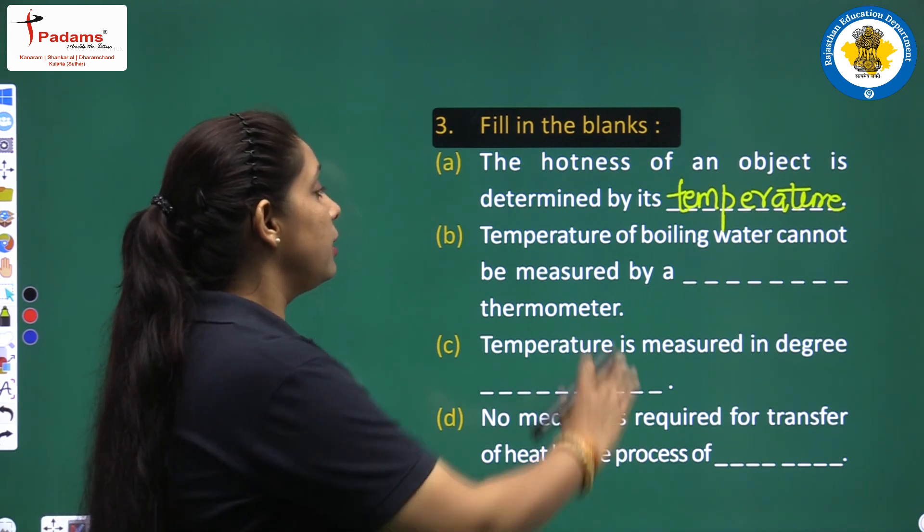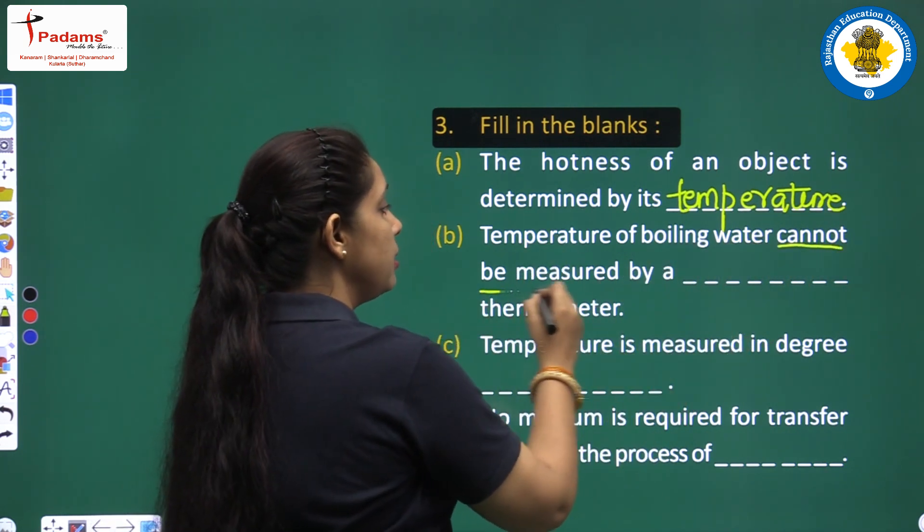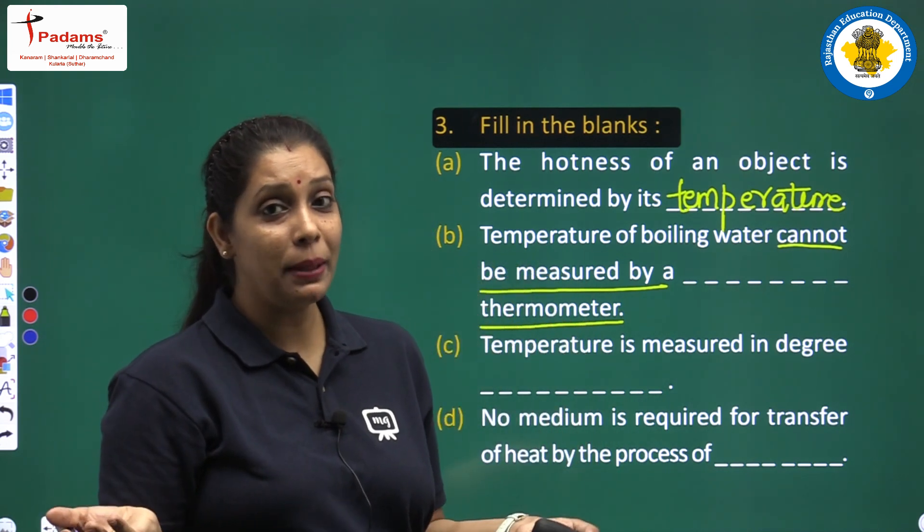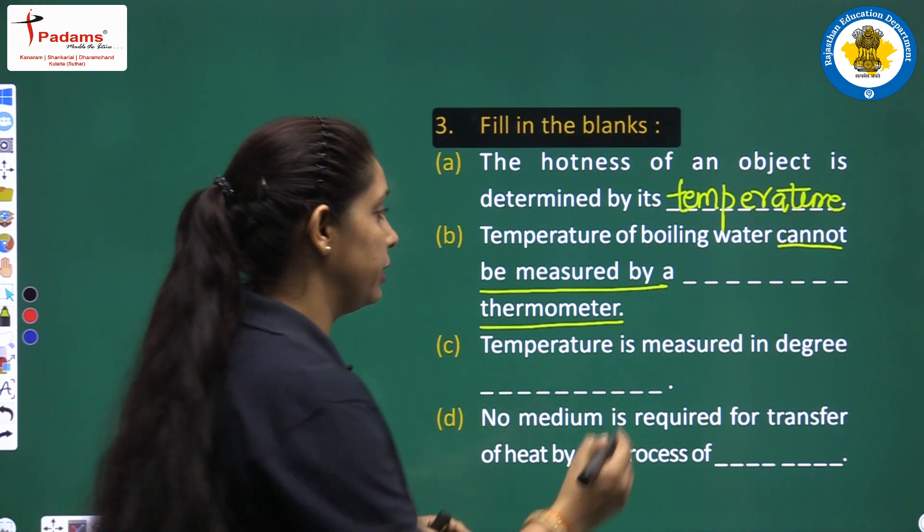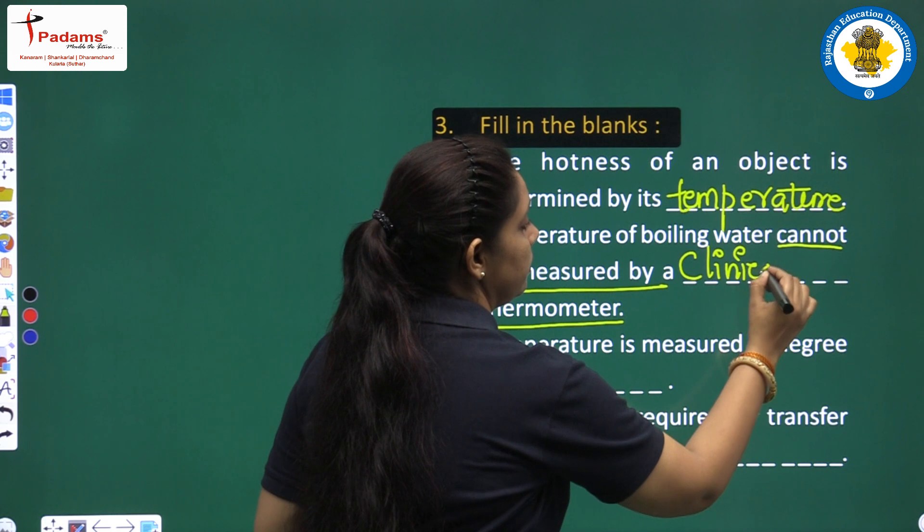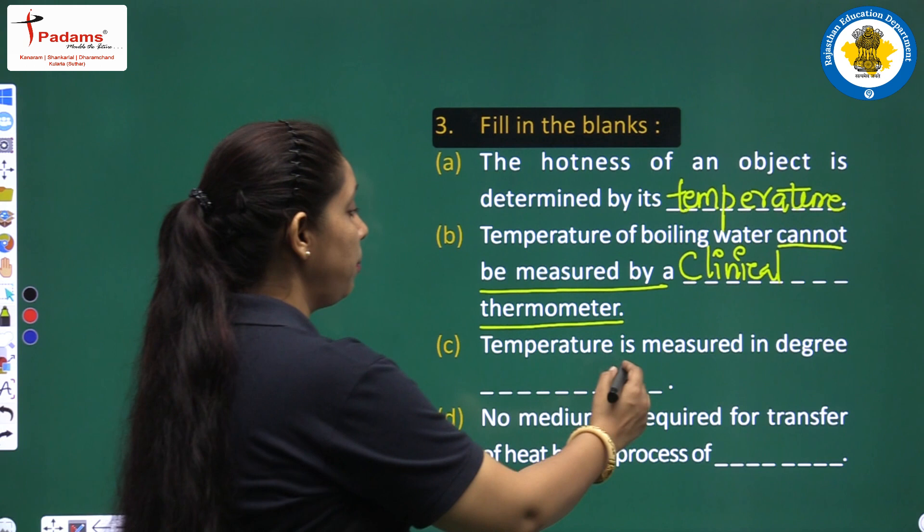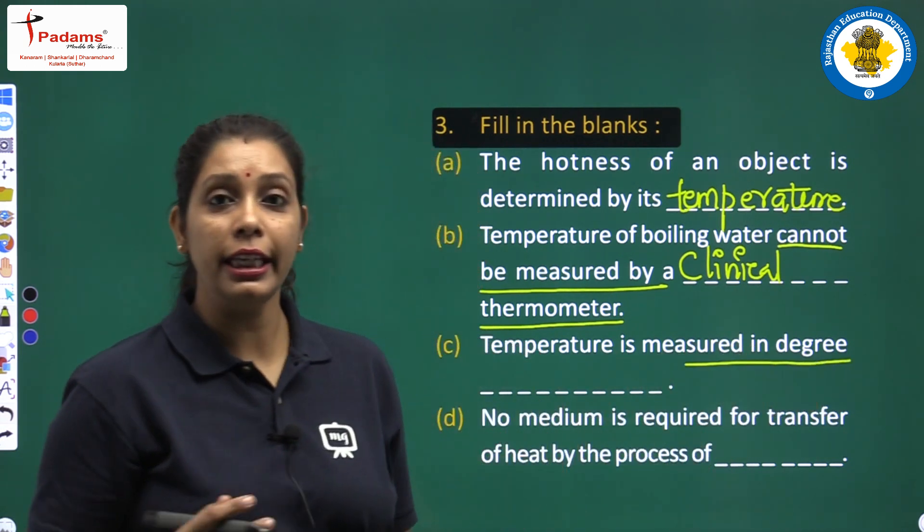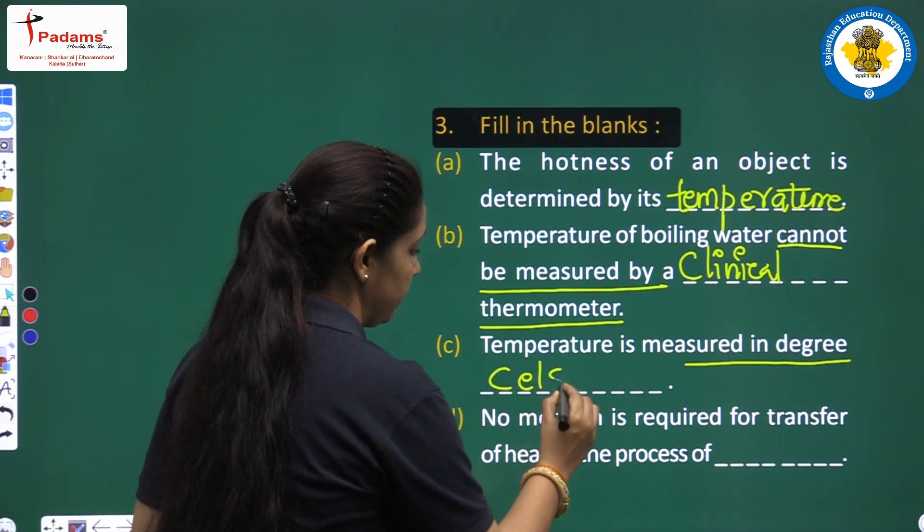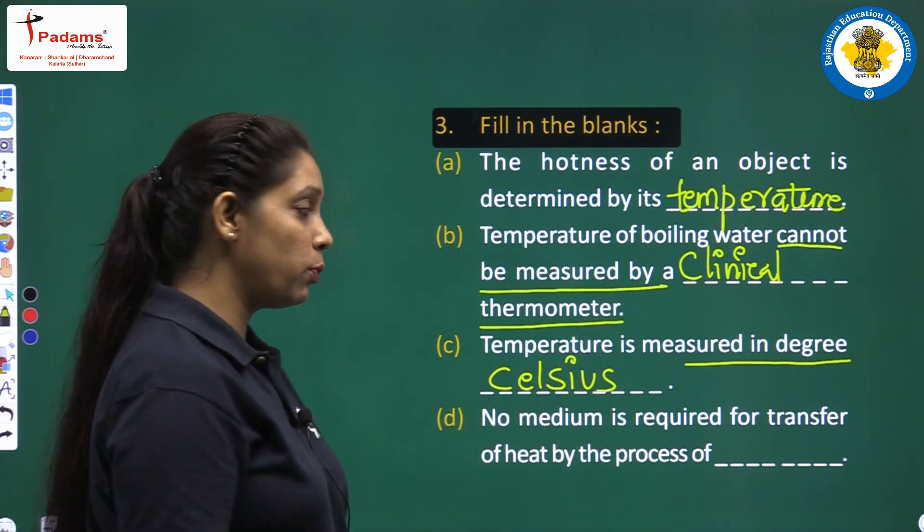Next one: the temperature of boiling water cannot be measured by which thermometer? It cannot be measured by clinical thermometer. Write down clinical. The next one: temperature is measured in degree Celsius. Write down Celsius.